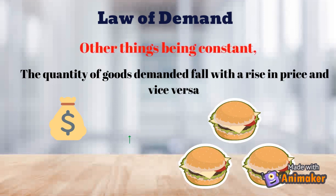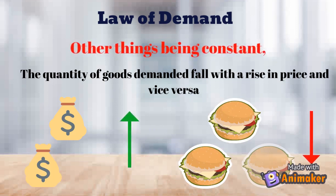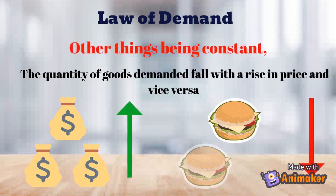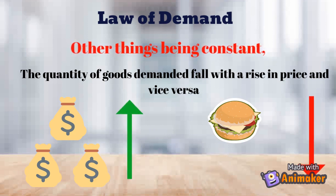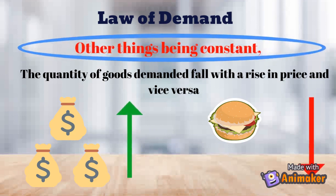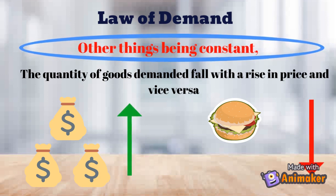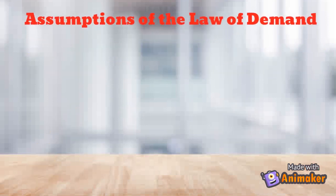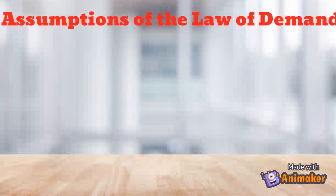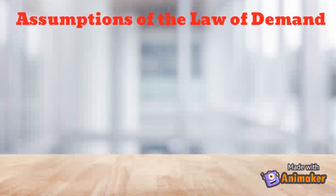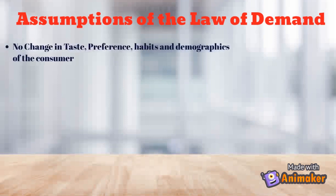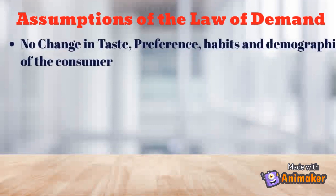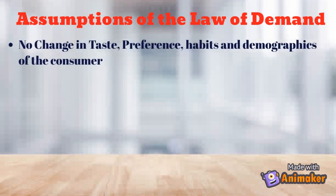So what are these other things which should remain constant? They are in fact the assumptions of this law, and also the factors which affect demand. Let's see them one by one. First, there is no change in your tastes, preferences, habits, and demographics — because if my tastes and preferences change, I may shift to Coke from Red Bull.